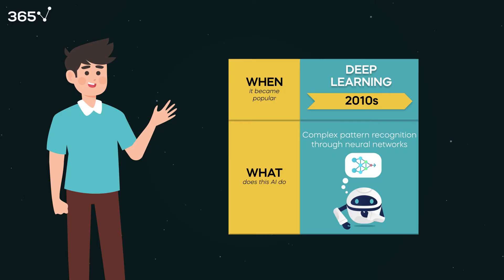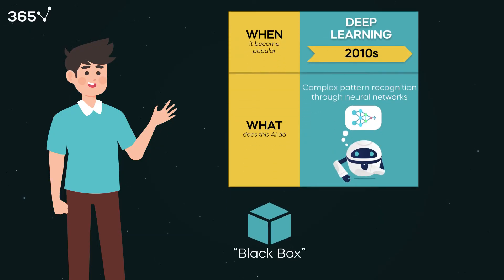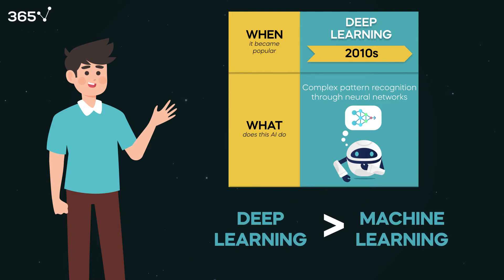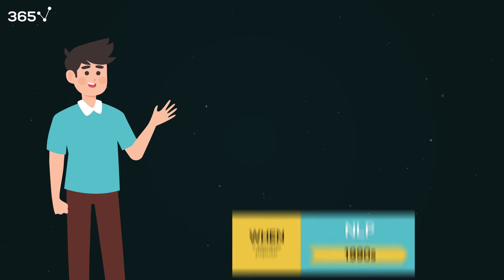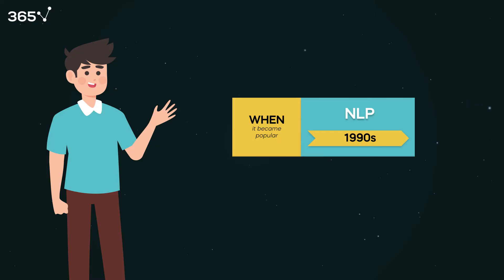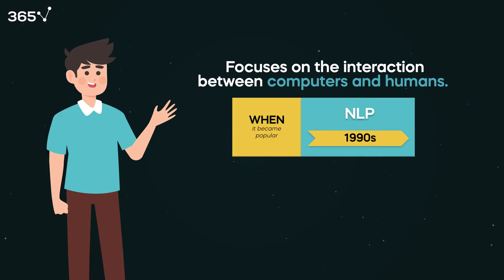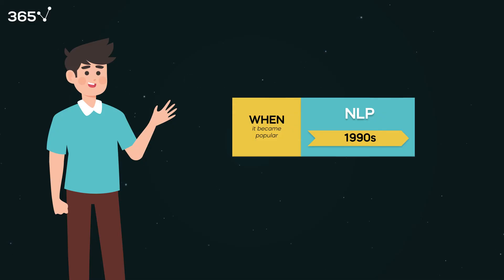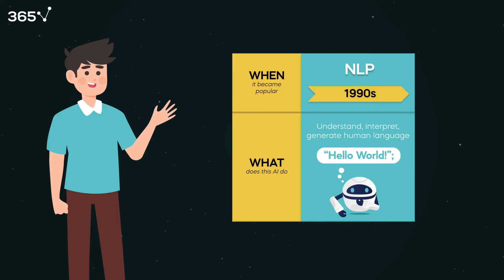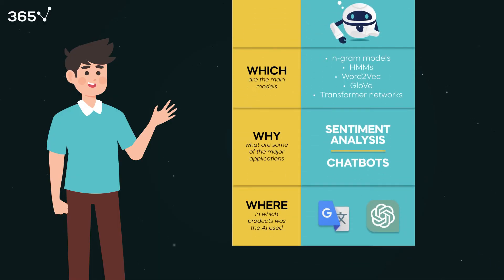Deep neural network models produce black box output — we don't know what happens inside the model, but we use its output, very much like what happens with the human brain. Deep learning models tend to outperform machine learning models at the expense of interpretability. Natural language processing is an AI discipline focusing on the interaction between computers and humans, enabling computers to understand human language and generate valuable output in human language. This is one of the core technologies behind ChatGPT and generative AI in general.